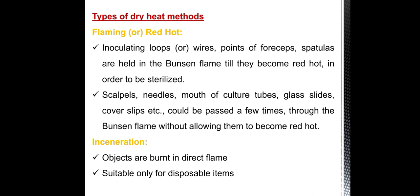Types of dry heat. First one: flaming or red hot. Inoculation loops or wires, points of forceps, and spatula are held in the Bunsen flame till they become red hot in order to be sterilized. A needle, mouth of culture tubes, glass slides, cover slips, etc. could be passed a few times through the Bunsen flame without allowing them to become red hot.